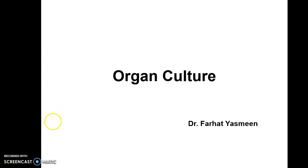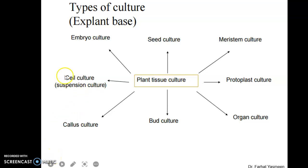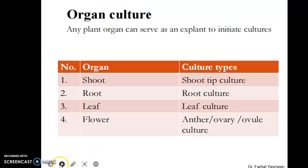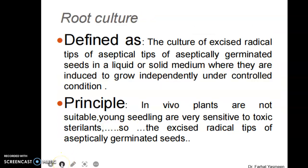In today's lecture we will discuss organ culture. There are different types of culture that include seed culture, embryo culture, meristem culture, protoplast culture, bud culture, callus culture, cell suspension culture, and organ culture, in which different types of organs are used for the initiation of a culture. If the organ is shoot, it is known as shoot tip culture; if root, it is root culture; if leaf, it is leaf culture; and if any part of the flower such as ovary or ovule is used, it is known as ovule culture.